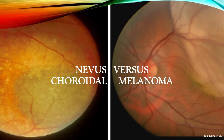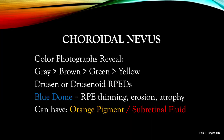Let's start with imaging of choroidal nevus versus choroidal melanoma. Choroidal nevi can be brown, gray, green, or even yellow. They can have drusen and/or drusenoid retinal pigment epithelial detachments on their surface, both suggesting the tumor has been present for some time. But the drusenoid RPE detachments are more transient and metabolically active than drusen. Choroidal nevi can demonstrate a balloon dome or blue discoloration over the apex, consistent with thinning, erosion, or atrophy of the overlying retinal pigment epithelium and Bruch's membrane.